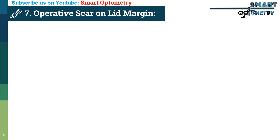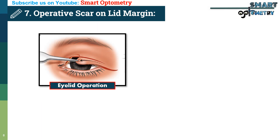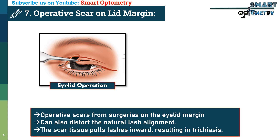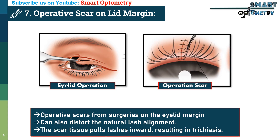7. Operative scar on lid margin. Operative scars from surgeries on the eyelid margin can also distort the natural lash alignment. The scar tissue pulls lashes inward, resulting in trichiasis.